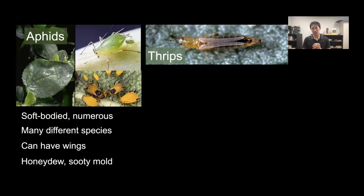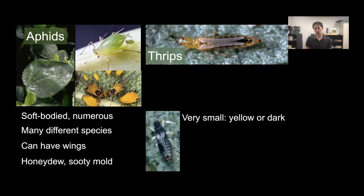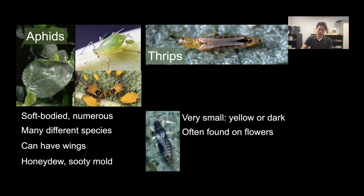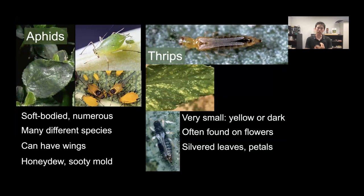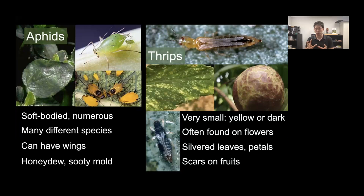Thrips are very small—yellow or dark. The western flower thrips is yellow; the greenhouse thrips is darker. They're often found on flowers; beat a rose or sunflower over your hand and you'll see tiny elongated insects running around. They feed on leaves and petals, leaving silvered, stippled sections, and can scar fruit with a scaly surface. Thrips damage is mostly cosmetic, though they can carry tospoviruses, which are more directly damaging to plants.